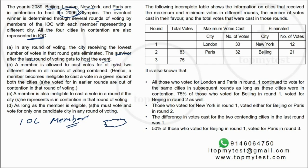A member is allowed to cast votes for at most two different cities across all rounds combined. So you can vote for London, then switch to Paris — but you cannot go London, Paris, then back to Beijing. You can technically vote for two different cities, but no more than two across all rounds of voting combined.